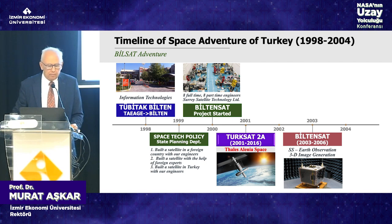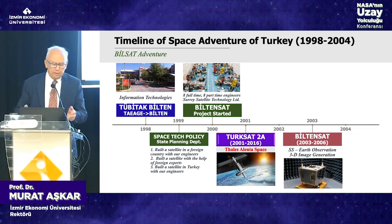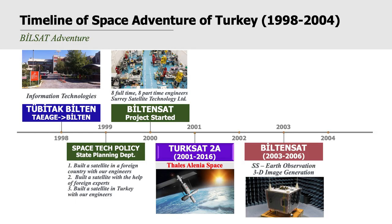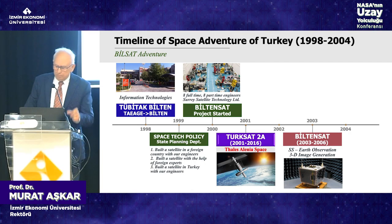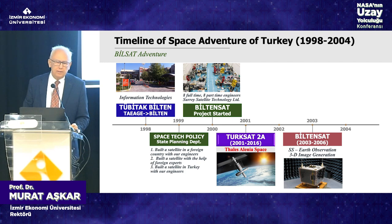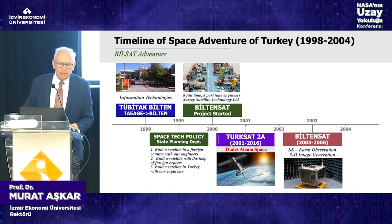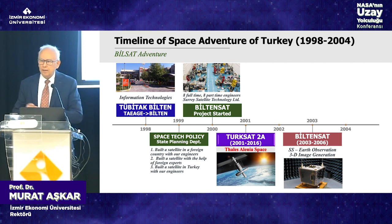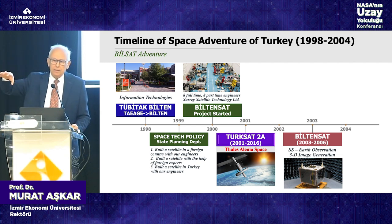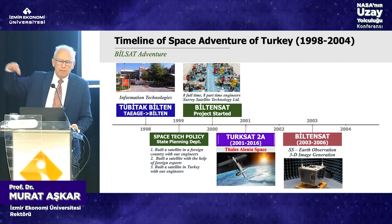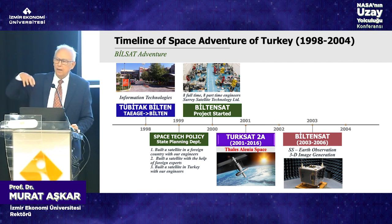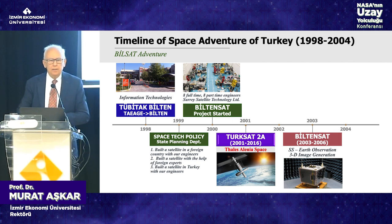I changed the name to Bilgi Teknolojileri and extended the working area of the institute. In 1999, I wrote a report to the state planning department in Turkey explaining in steps how we could develop our space technology: first, construct a satellite in a foreign country with our engineers; second, build our own satellite with foreign help; and third, design and build our own satellite. I also explained how we could eventually send astronauts to space.